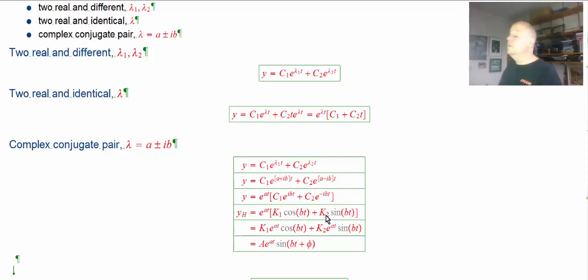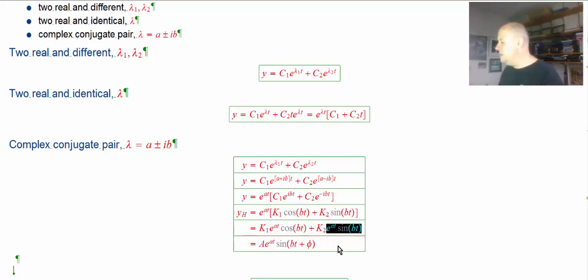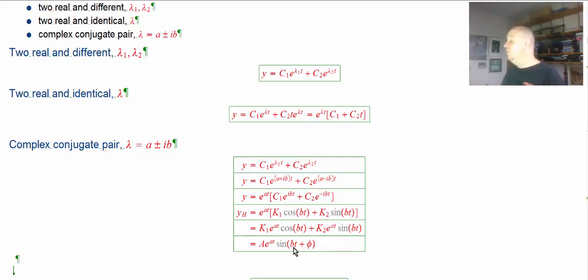We know from the previous video that a linear combination of e^(ibt) and e^(−ibt) can be changed into a linear combination of cos(bt) and sin(bt). So if we get a complex conjugate eigenvalue, our homogeneous solution is e^(At) times [C₁·cos(bt) + C₂·sin(bt)]. The constants come from initial conditions. We can think of this as one little solution Y₁ = e^(At)·cos(bt) and another Y₂ = e^(At)·sin(bt). We also saw in that other video that a linear combination of cos and sine can be written as a single shifted sinusoidal function.